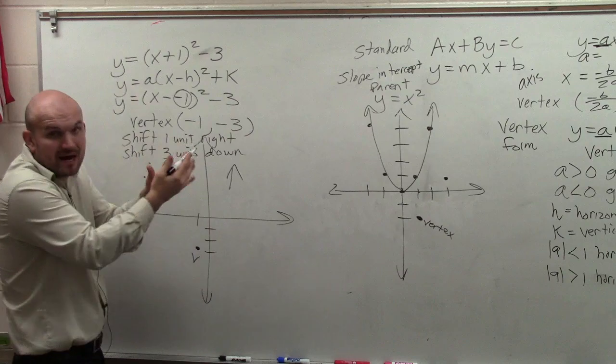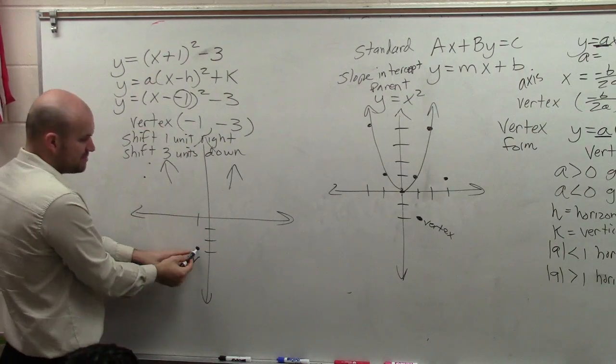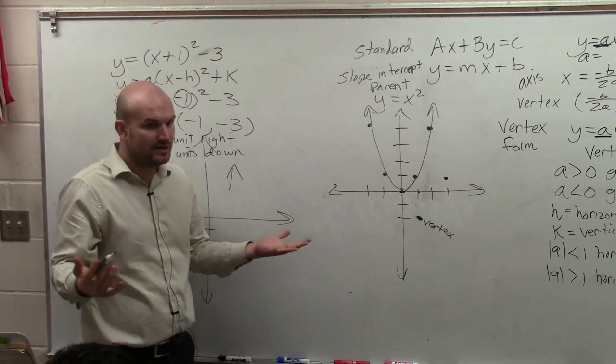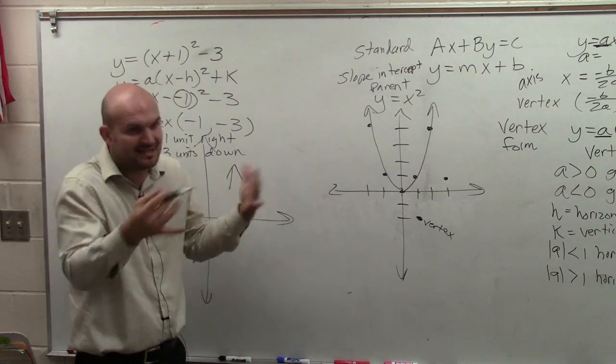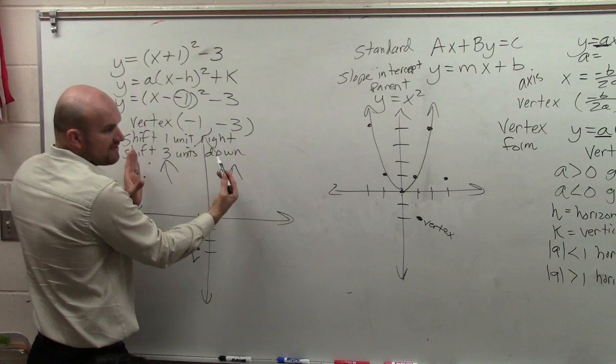Since my a is positive, I know my graph opens up. Right? If a was negative, it would open down. So here's my vertex. I know the graph was going to open up. Because previously, what we did, we didn't know if it opened up or down. We just plotted points, right? And just kind of saw where they're at. So by looking at a, I can make now the distinction that my graph is going to go up.